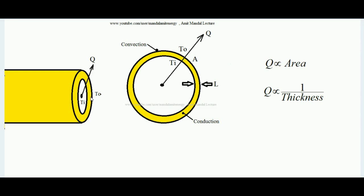We are applying insulation over the cylinder — this yellow colored entity is the insulation. The purpose of applying insulation is to restrict heat transfer. Suppose the inside temperature of the cylinder is Ti and outside is To, with Ti greater than To. What we observe is that up to a particular thickness of insulation, the heat transfer rate actually increases, contrary to our goal.